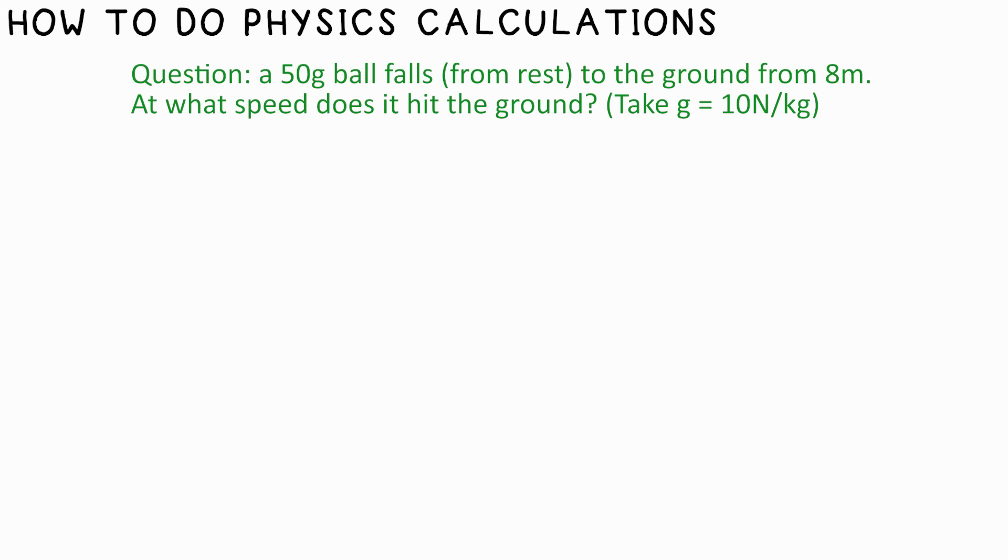Here's the question we're going to use. A 50 gram ball drops from rest and it falls eight meters to the ground. At what speed does it hit the ground? First thing we do, number one, we write down the data we've been given in the question. So we've been told the mass of the ball is 50 grams, and we've been told the height that it falls, eight meters. But also write down what we're being asked to find. We're being asked to find the speed. The symbol for speed is V because it's basically velocity. So we're going to put a question mark there for that.